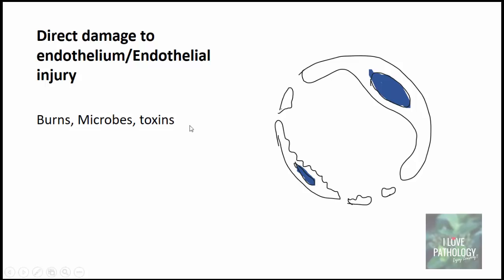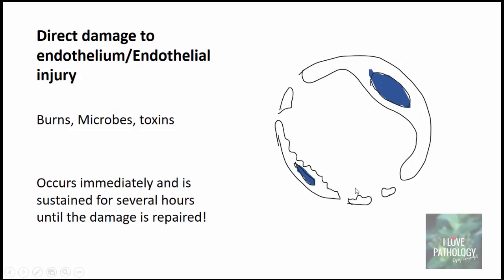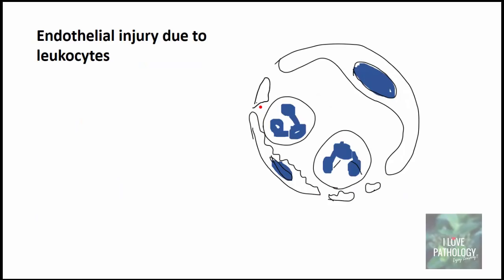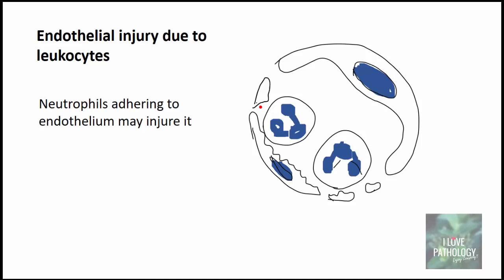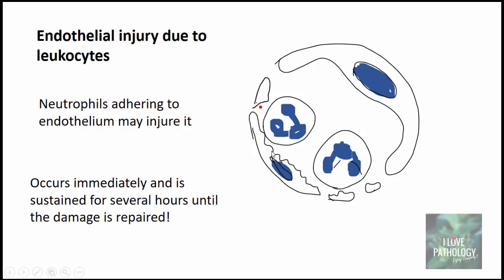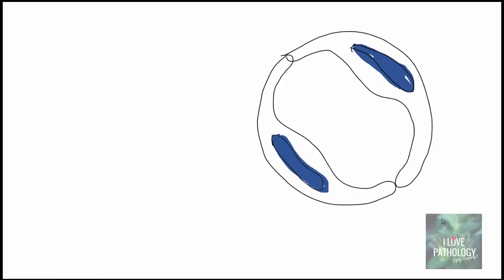The second mechanism is direct damage to the endothelium. In trigger events like burns or exposure to microbes or toxins, the endothelial cells are directly damaged and broken. This occurs immediately upon damage and is sustained for several hours until repaired. Fluid escapes out through these damaged endothelial cells.